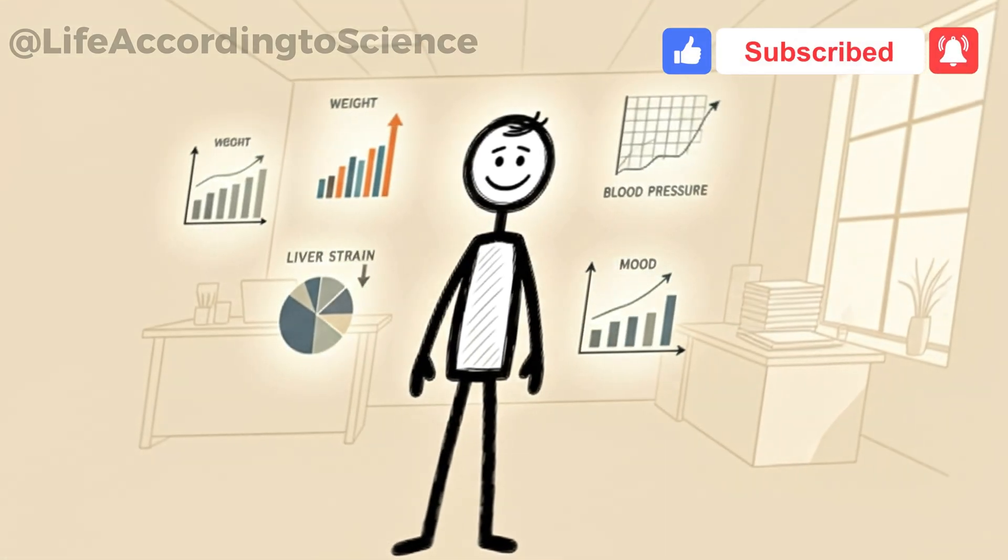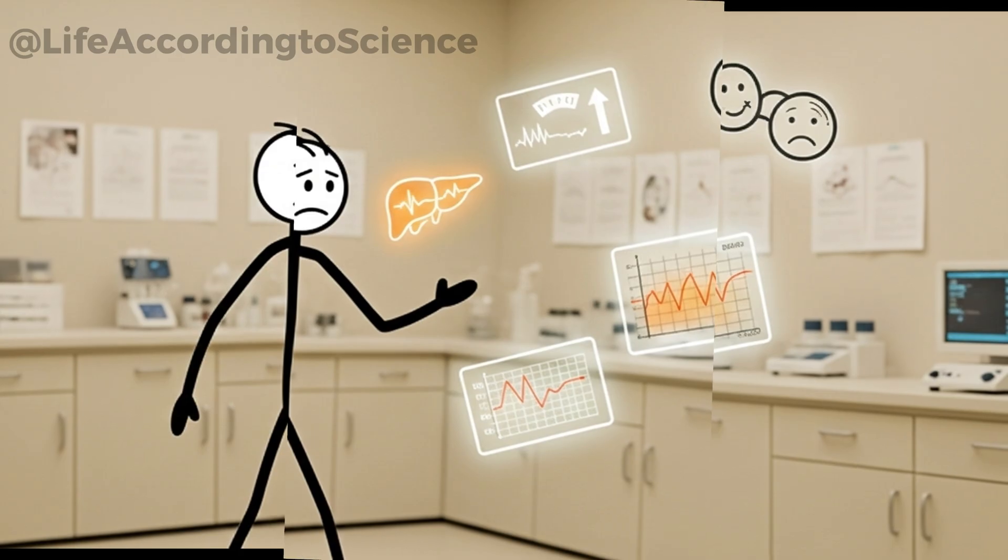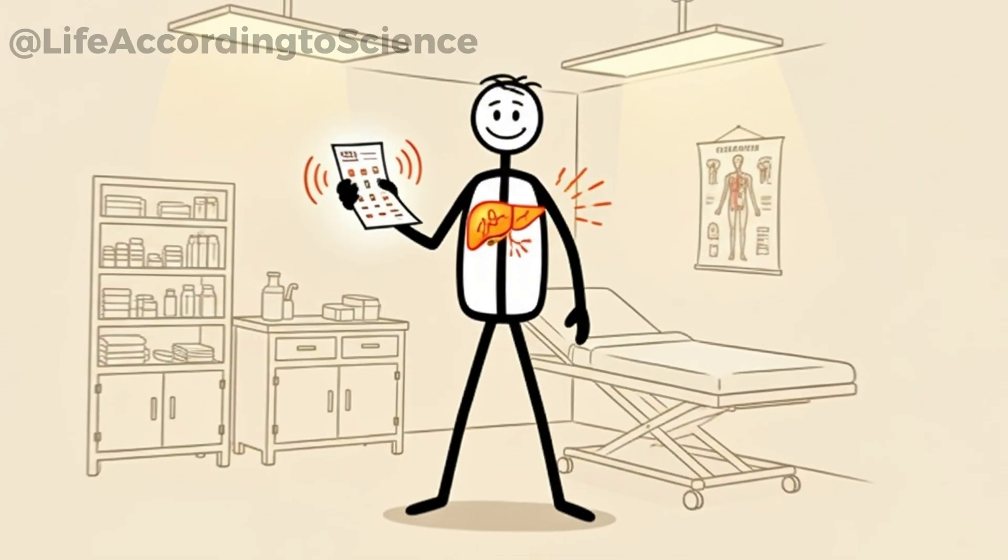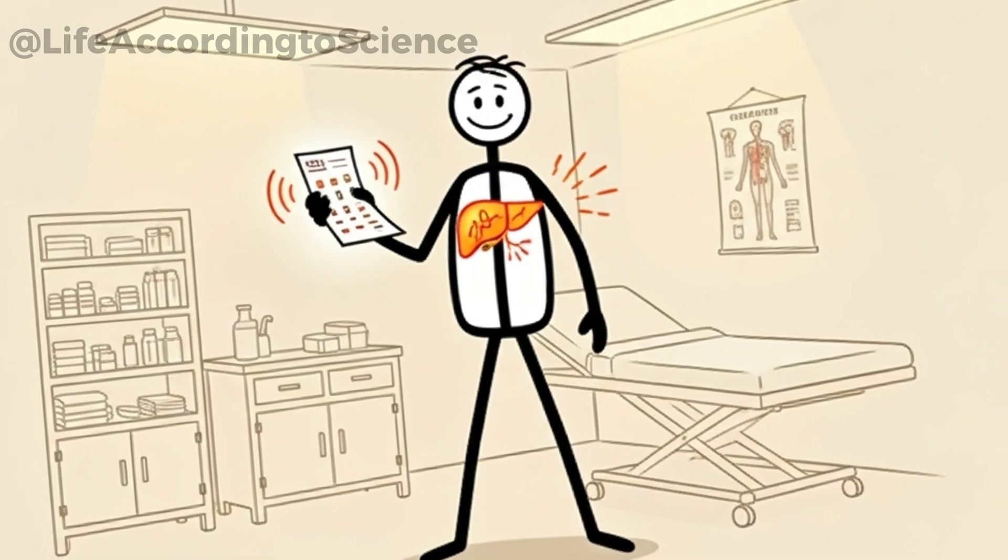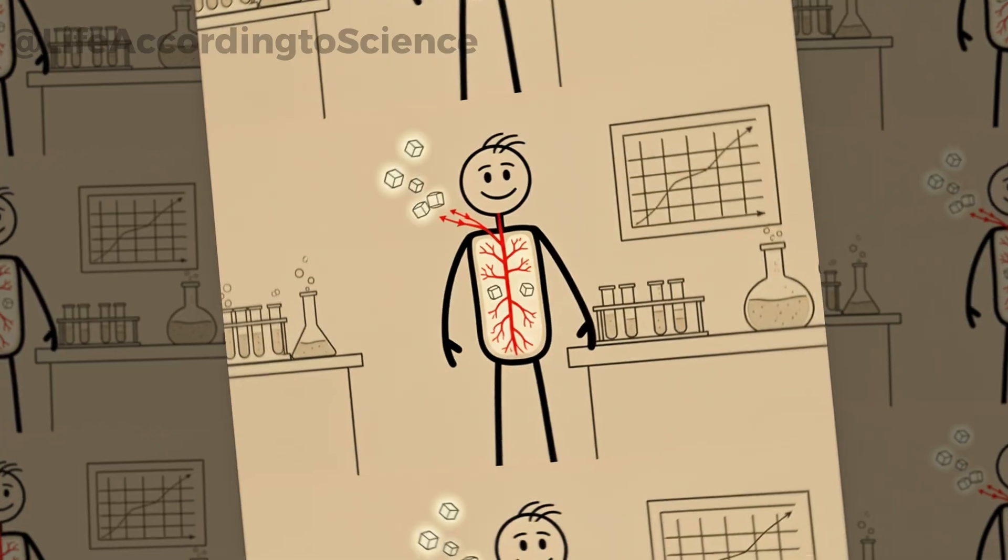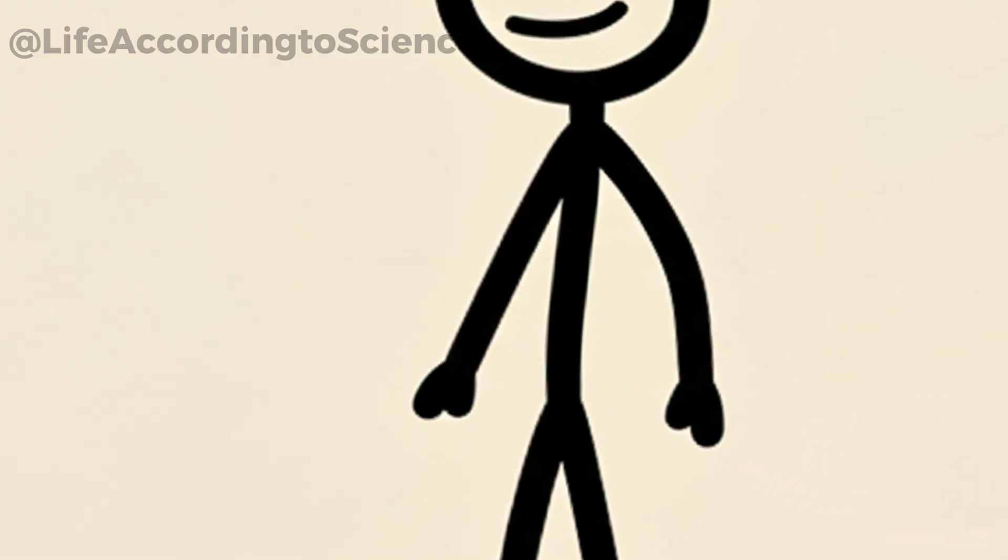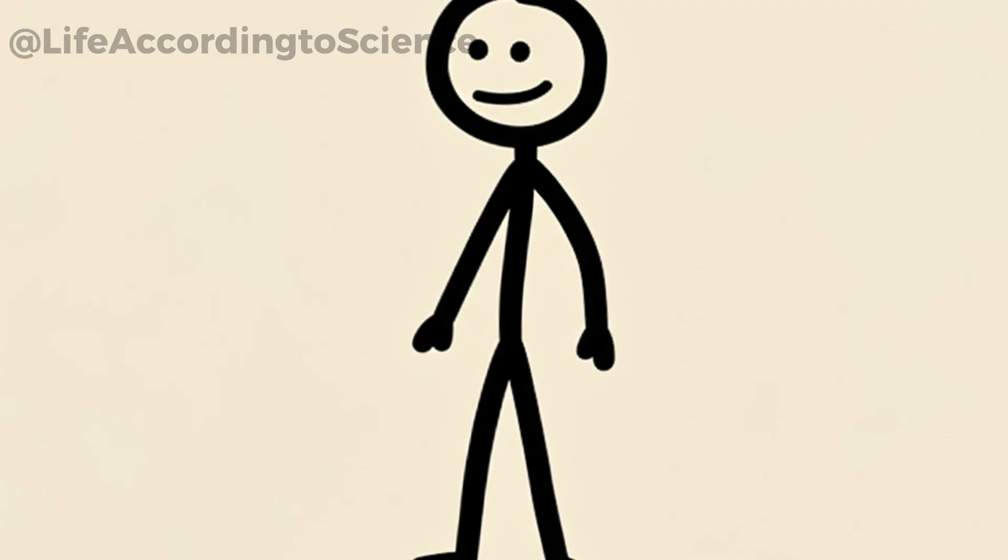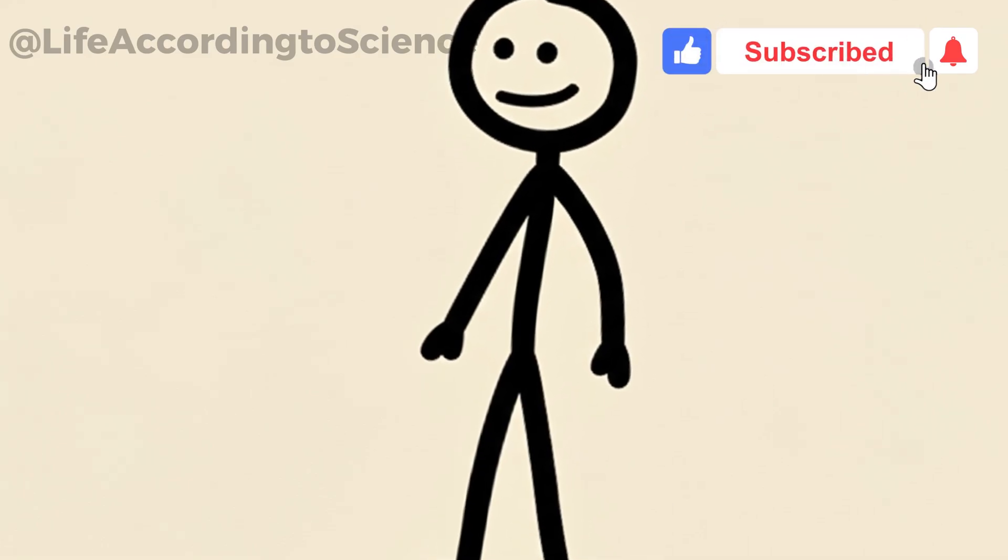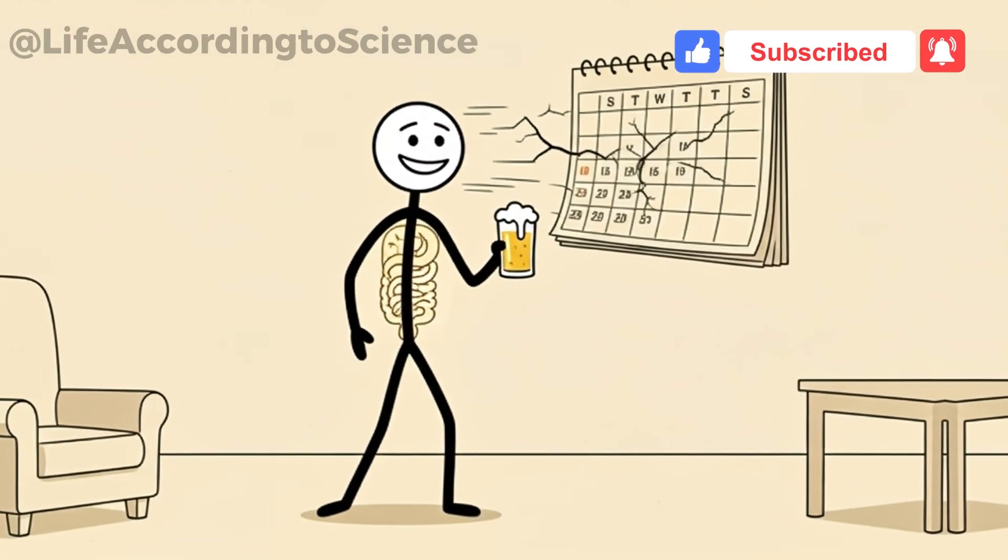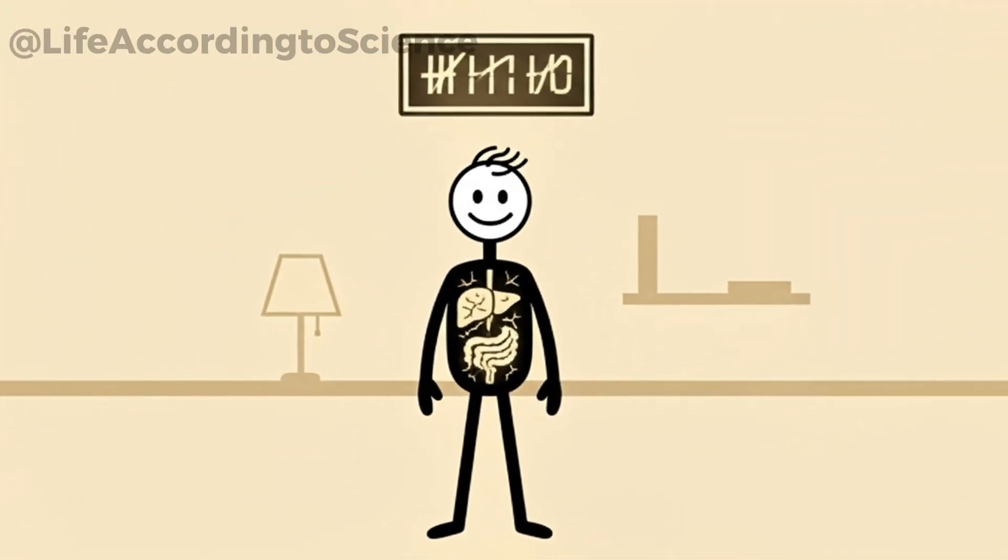So what does the research say after 30 straight days of beer? Clinical studies have documented measurable changes in weight, liver function, blood pressure, and mood. Even moderate amounts show negative impacts. Liver enzyme tests often reveal early signs of stress, your body's red flag that damage is beginning. Blood sugar levels may also rise, increasing the risk of insulin resistance. Psychological studies confirm that cognitive performance declines with daily drinking. Reaction time slows, memory worsens, and problem-solving ability drops compared to non-drinkers. In short, 30 days of just one beer a day is not as harmless as it sounds. The science is clear. Your body keeps score, and the results are measurable.